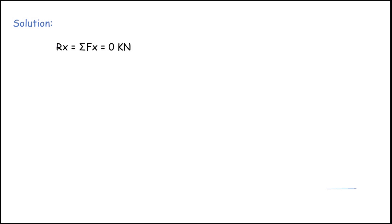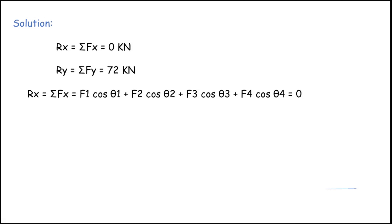For the solution, the resultant along the x-axis is 0 and along the y-axis is 72 kN. The x-component formula is: Rx = ΣFx = F1·cos θ1 + F2·cos θ2 + F3·cos θ3 + F4·cos θ4 = 0.